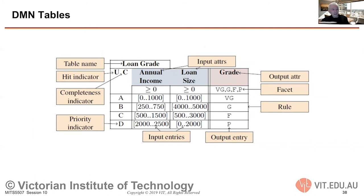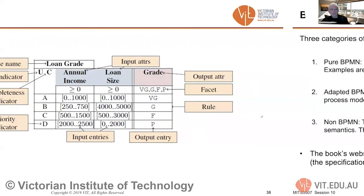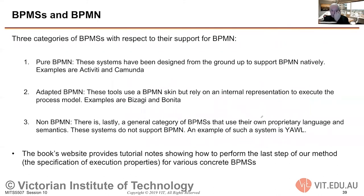The DMN tables might look like this: we have a table name, a hit indicator, a completeness indicator, and priority indicators A, B, C, D. You might have annual income as an input — your annual income falls into one of these categories — and the loan size is determined as an output entry. So you get a grade or output such as BG, GFP, and so on from a DMN table.